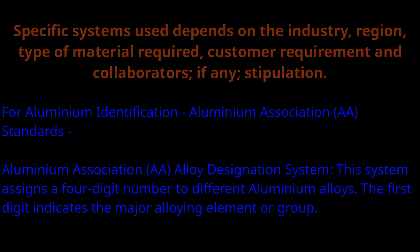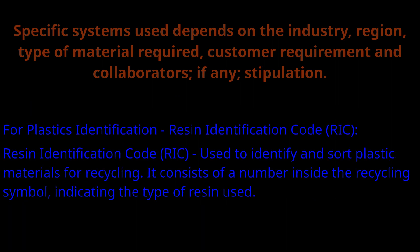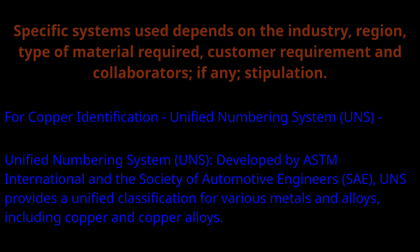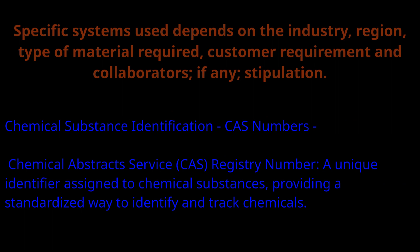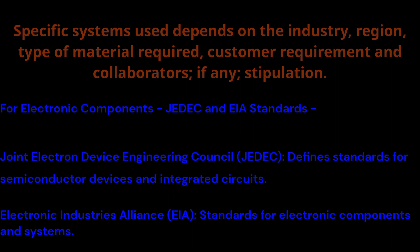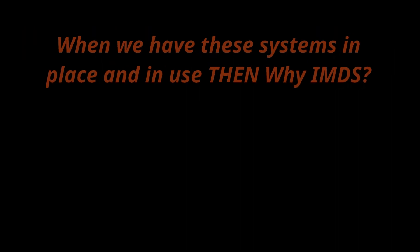The Aluminium Association Alloy Designation System assigns a four-digit number to different alloys, where the first digit indicates the major alloy element. For plastic identification, a Resin Identification Code is used to identify and sort plastic materials. For copper identification, the Unified Numbering System developed by ASTM, SAE, and UNS provides classification for various coppers and their alloys. For chemical substance identification, a CAS number assigns a unique number to identify and track chemicals. For electronic components, either JEDEC or EIA systems are used.